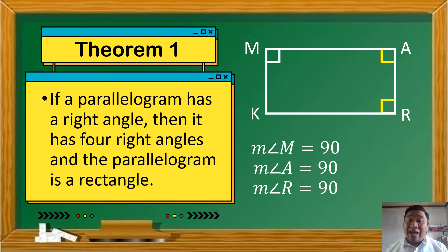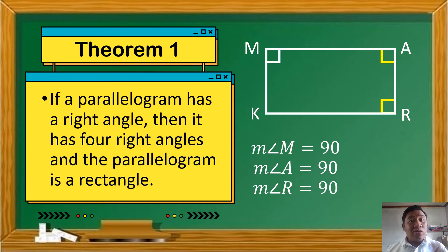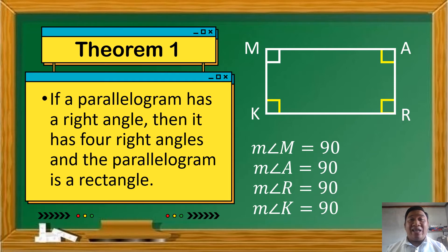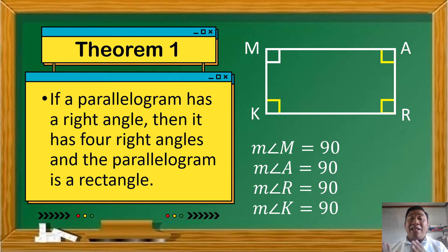And last, ang kulang na lang natin is si angle K. Ano ba ang relationship ni angle M at ni angle K? Again, they are consecutive angles — ibig sabihin, the sum of their measure is equal to 180, kasi dapat supplementary ang consecutive angles. Kung si angle M is equal to 90, then the measure of angle K is also equal to 90 degrees. So, kitang-kita natin dyan na isa lang yung pinakita na right angle, si angle M lang. Pero lahat pala ng angles sa loob ng parallelogram na yan ay puro right angle, and that parallelogram is what we call a rectangle.